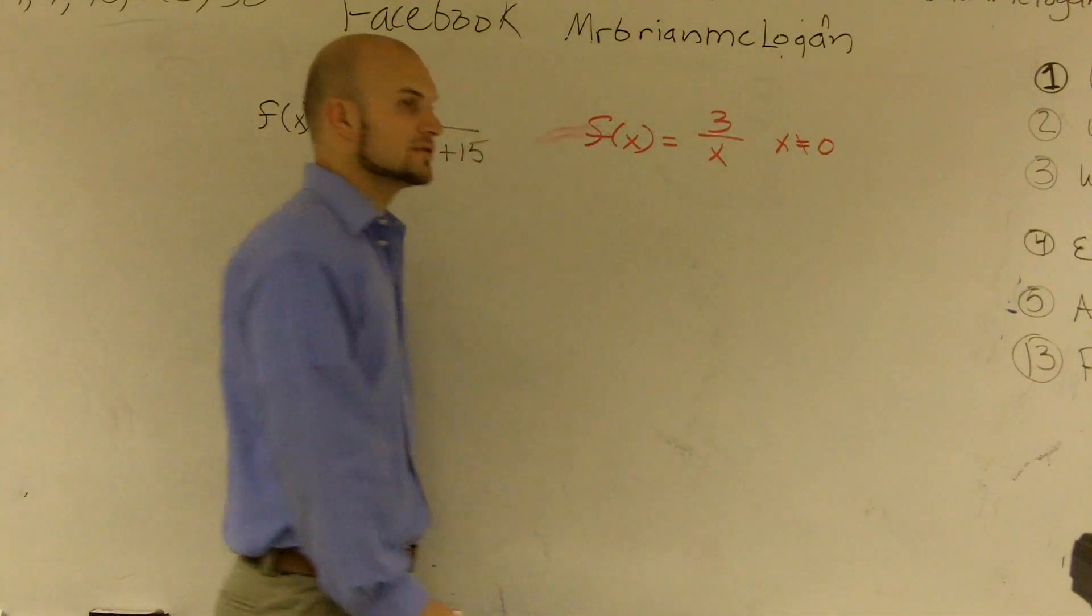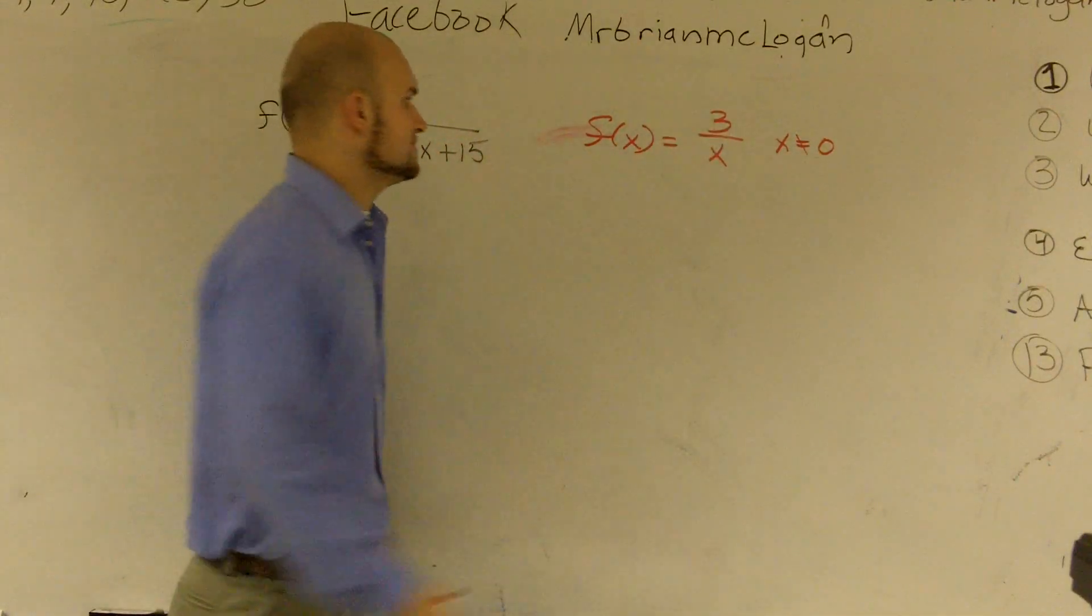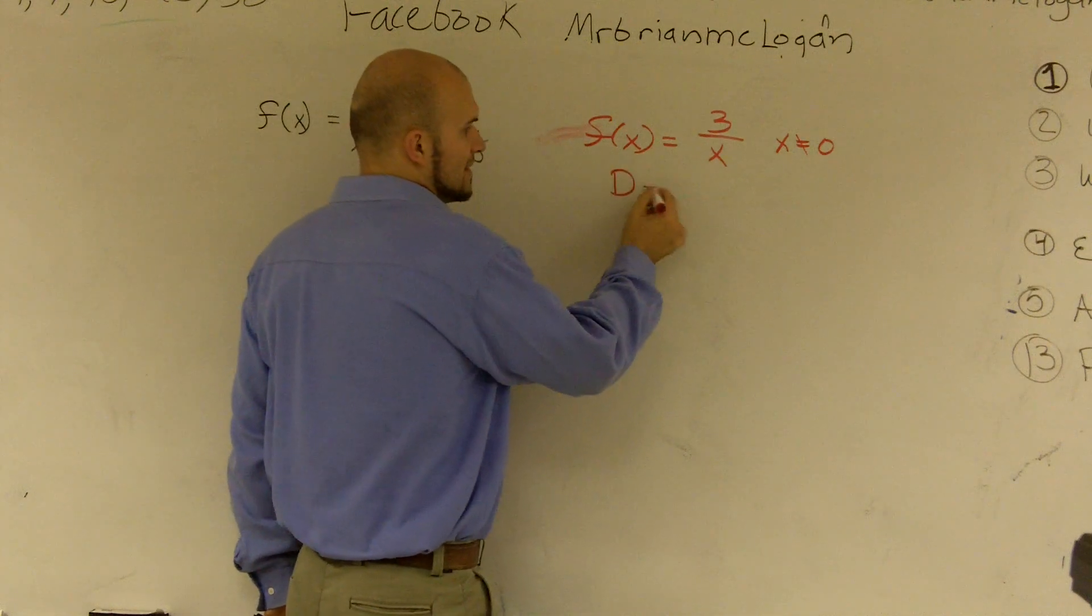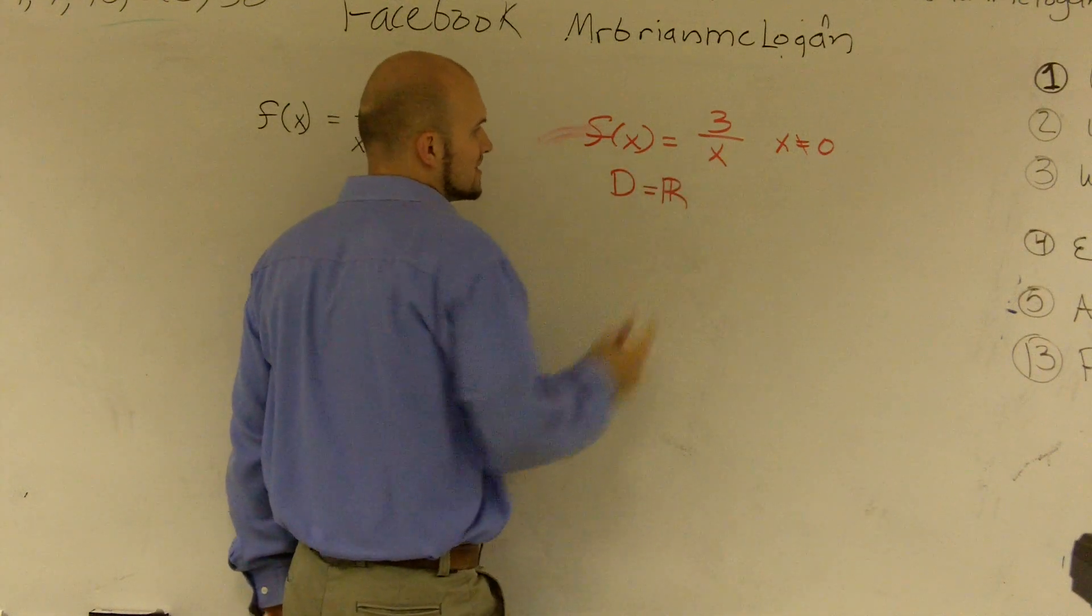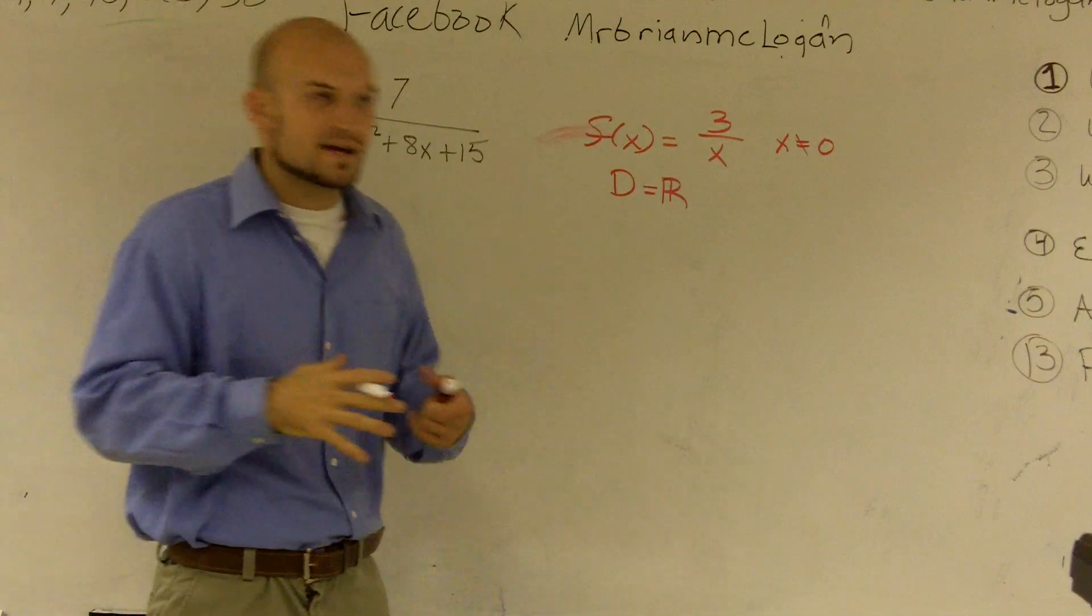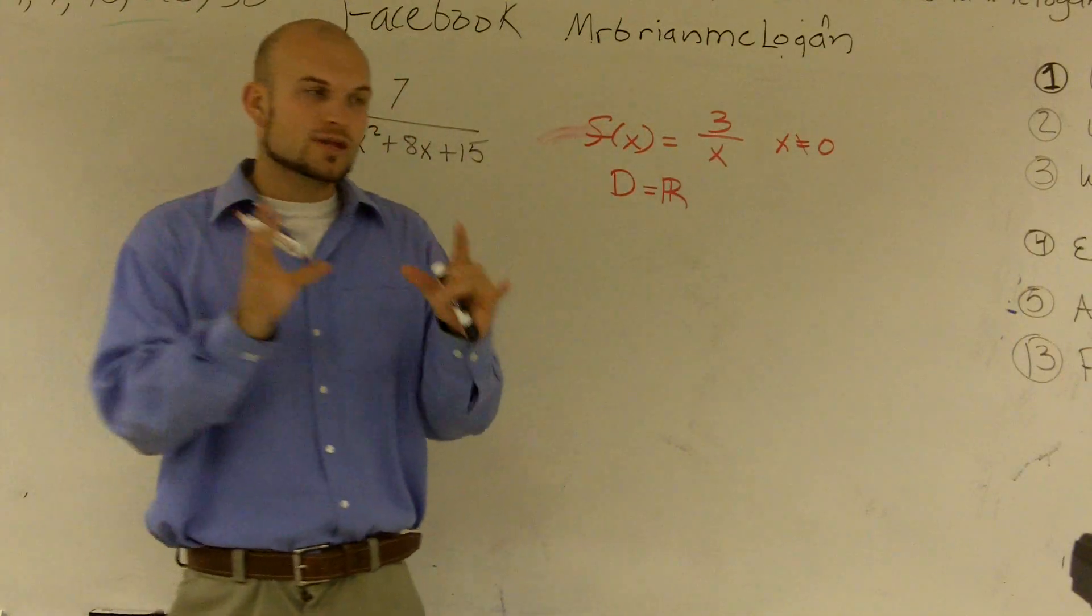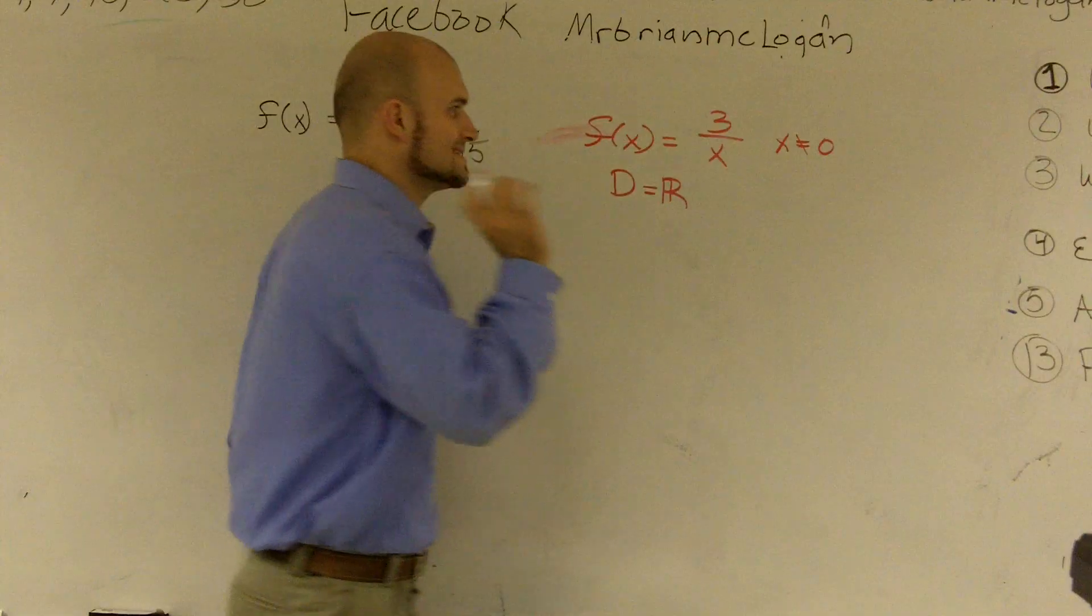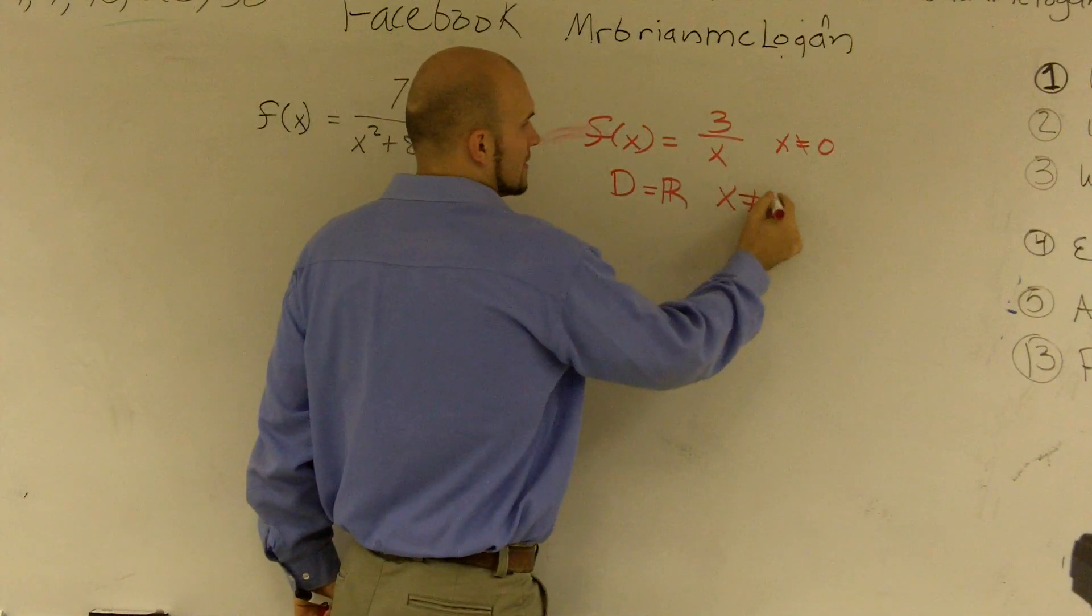So therefore, we write x cannot equal 0. So the domain for this function, if I was going to write the domain, it's going to be all real numbers. It's all numbers: negative 5, negative 13, 107. All numbers work except for 0.